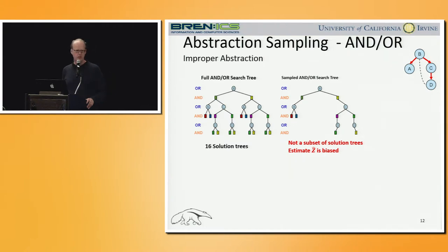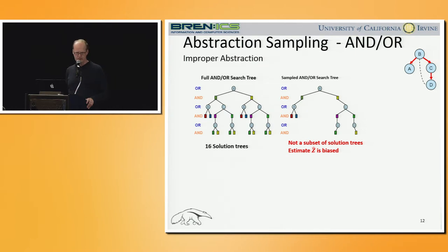The next issue is extending the OR case to AND-OR. By doing a naive straightforward extension of this scheme, we need to be careful because it could give us invalid trees and hence biased estimates. In the paper we have identified a sufficient condition that guarantees valid subtrees and hence unbiased estimates. The first example shown is an invalid solution subtree, and the second one is a proper or valid solution.